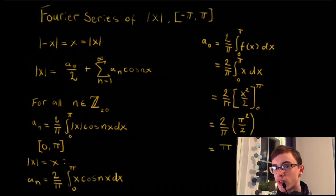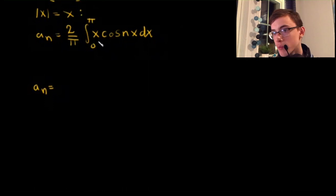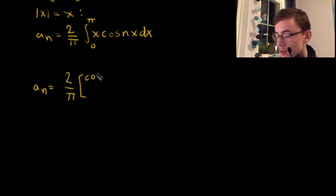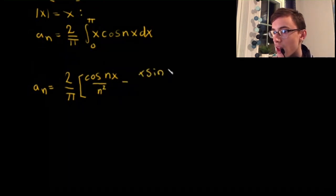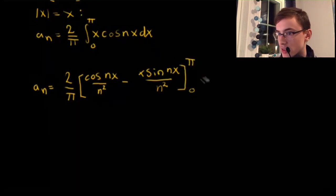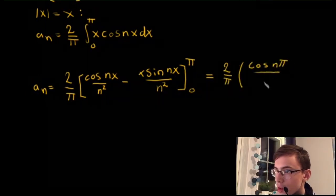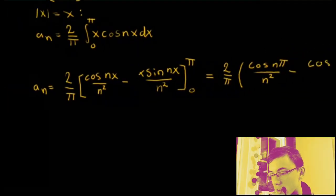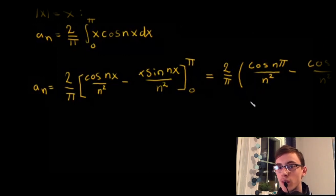For n greater than 0, by the definition of f, aₙ becomes — integrating by parts — 2/π times [cos(nx)/n² minus x·sin(nx)/n], evaluated from 0 to π. This gives 2/π times [cos(nπ)/n² minus cos(0)/n²]. Notice that the sine terms have cancelled out, because sine of any multiple of π is 0, and sine of 0 is also 0.